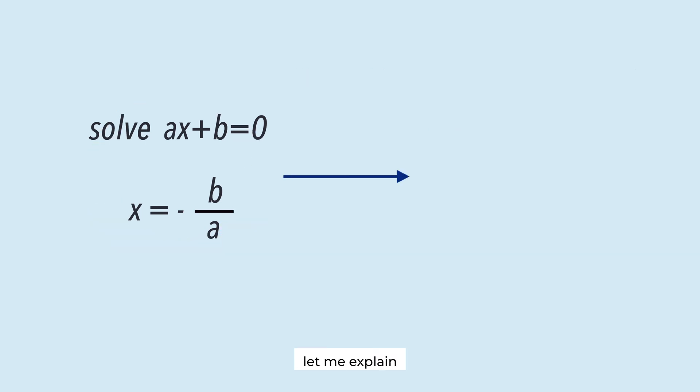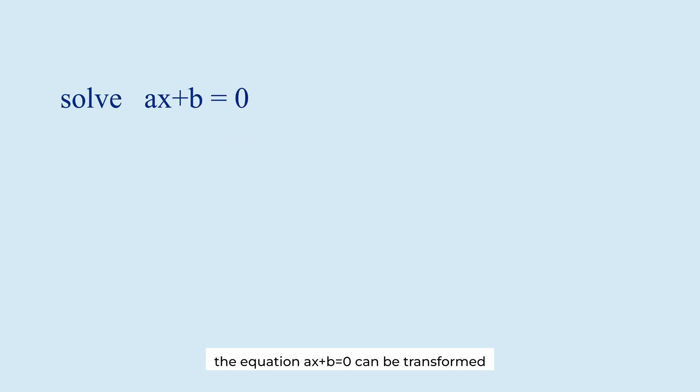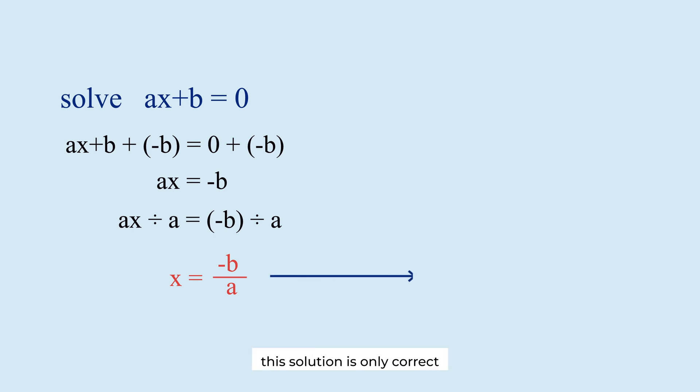First, let me explain why this solution is wrong. The equation ax plus b equals 0 can be transformed into ax equals minus b. Dividing both sides by a, the solution is x equals minus b over a. However, this solution is only correct under certain conditions. It is correct only if a is not equal to 0. But nowhere in the problem does it mention that a is not 0.